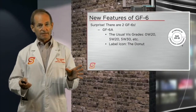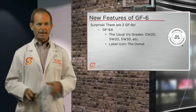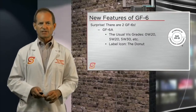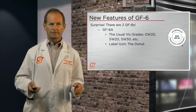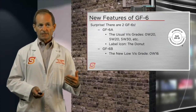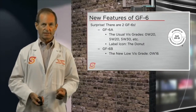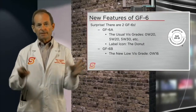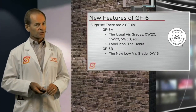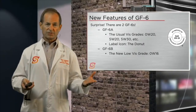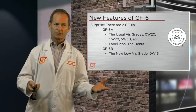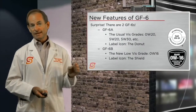GF6B is the new category representing the new lower viscosity grades. The official one in the system as part of GF6B is 0W16. In the future, 0W12 and 0W8 would not be surprising. They have been granted a different label icon — a shield — to avoid confusion with normal viscosity grades.